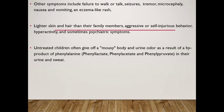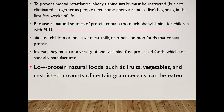Untreated children often emit a mousy body and urine odor as a result of byproducts of phenylalanine — phenyllactate, phenylacetate, and phenylpyruvate — in the urine and sweat. To prevent mental retardation, phenylalanine intake must be restricted but not eliminated altogether, beginning in the first few weeks of life. Because all natural protein sources contain too much phenylalanine for PKU children, affected children cannot have meats, milk, or other common protein-containing foods.